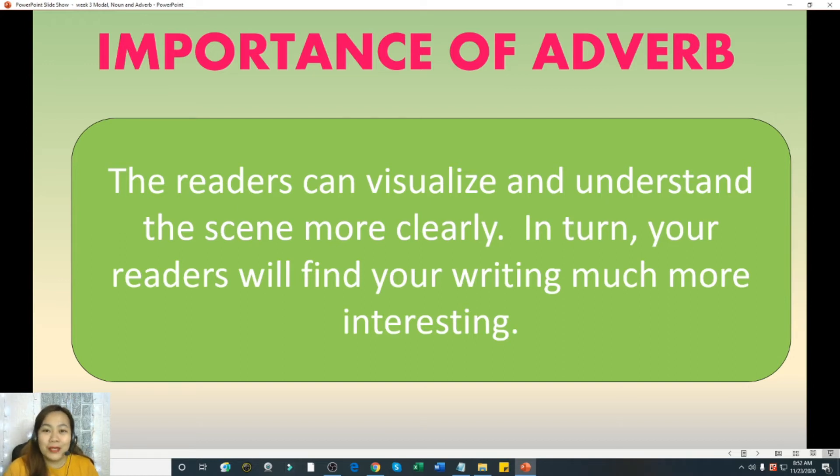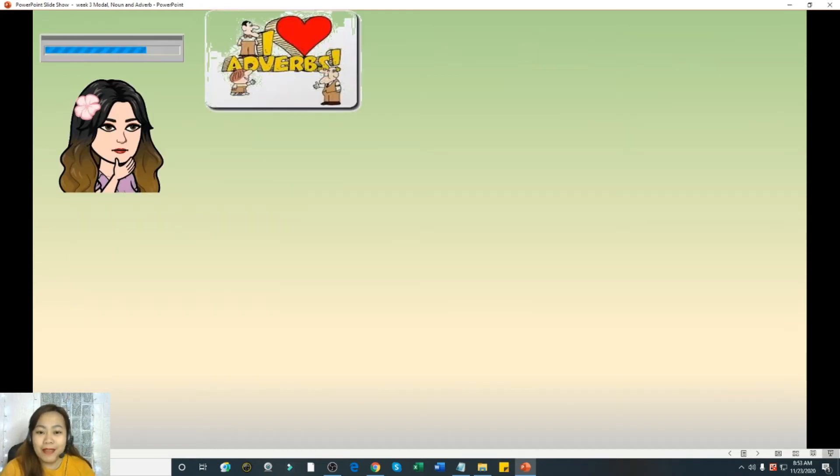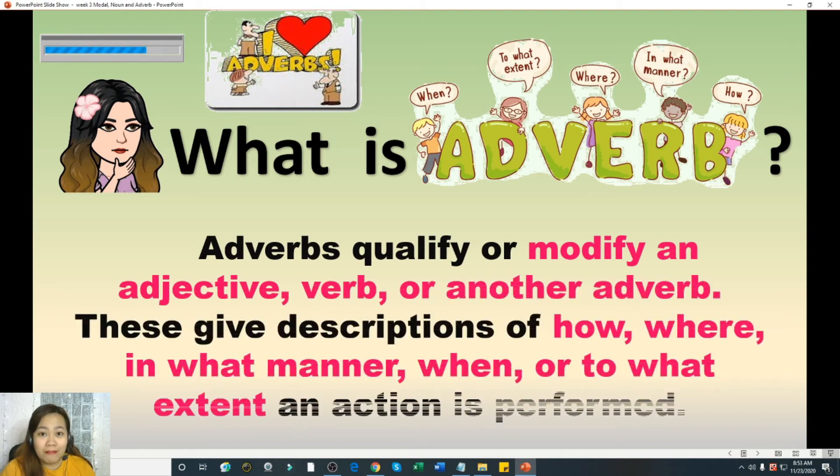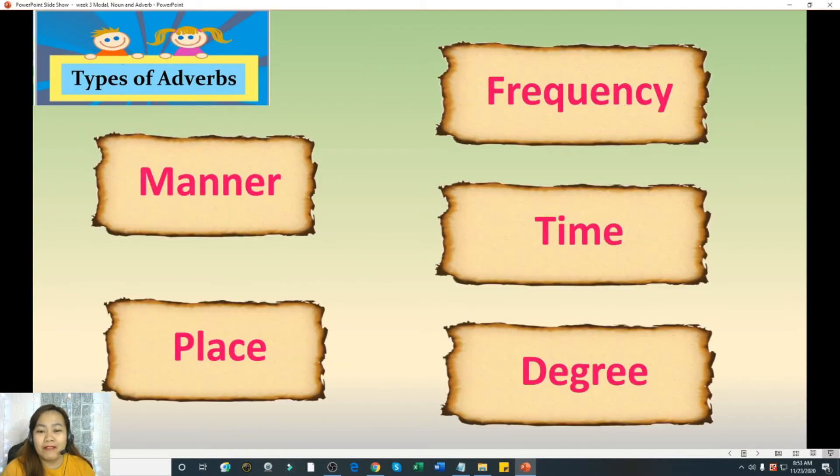So we must use adverbs in our sentences. What are adverbs? When we say adverbs, they qualify or modify an adjective, verb, or another adverb. This gives descriptions of how, where, in what manner, when, or to what extent an action is performed. So literally it answers the question how, where, in what manner, when, or to what extent. So we have five different types of adverbs: first manner, second place, third frequency, fourth time, and the fifth one is degree.